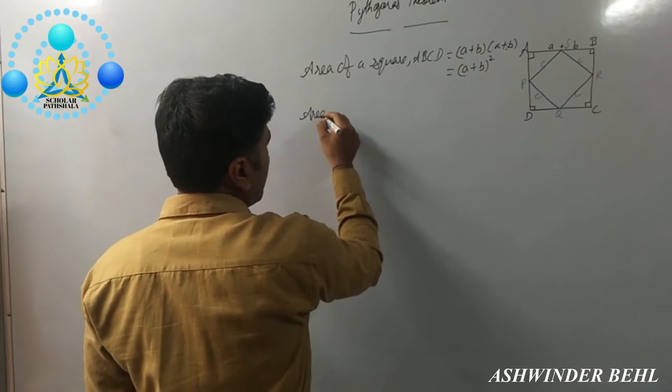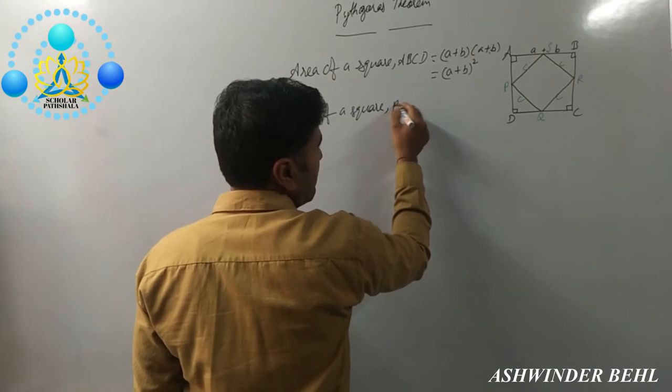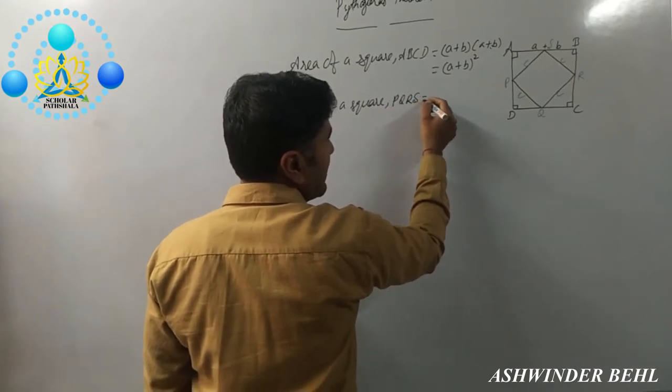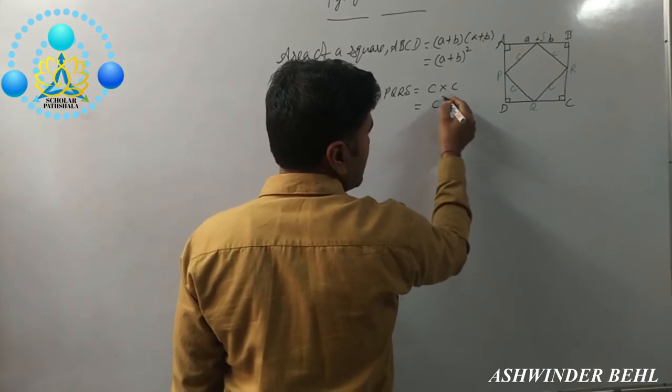Area of square PQRS, that is C into C, meaning C square.